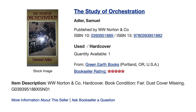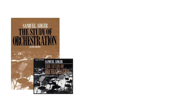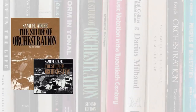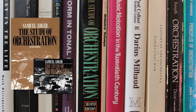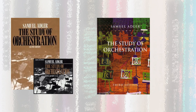Enter Samuel Adler. His 1982 first edition of The Study of Orchestration was a brilliant answer to those authors, but had some technical challenges in printing, along with quite a few typographical errors and unclear passages. Adler quickly addressed those concerns with an even better second edition in 1989, along with a package of compact discs that brought many of the examples in the book to life for student listeners. The second edition was really the one that cemented Adler's reputation as a great writer and teacher of orchestration. A third edition soon followed in 2002, this time with a step toward integrated multimedia.